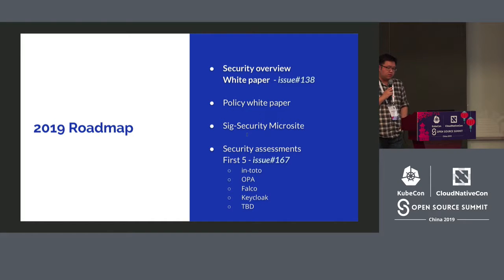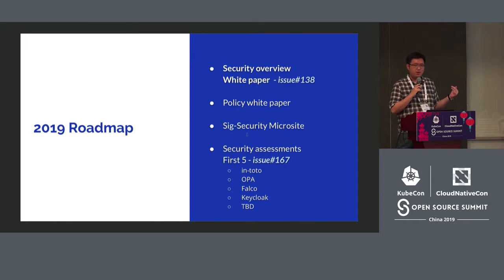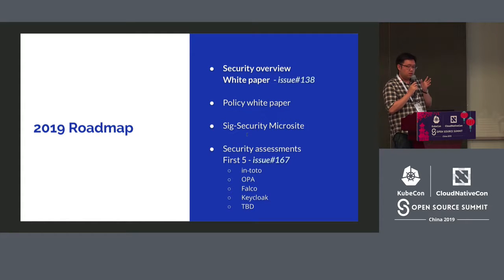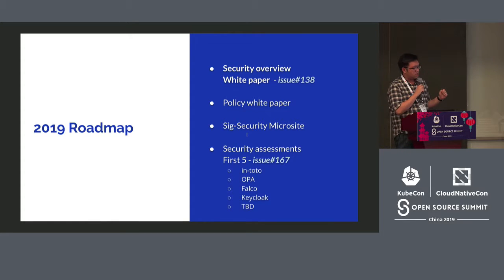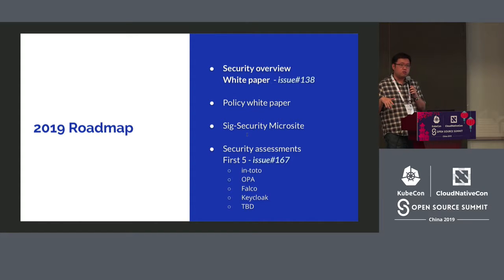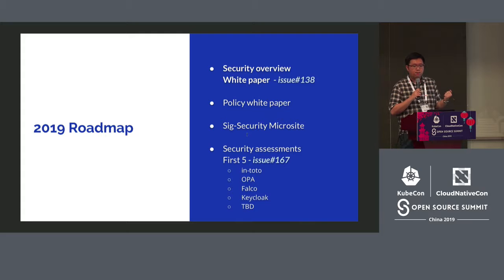A few things coming out: on top of the policy paper, we are also writing a more generic security white paper. What this white paper is going to talk about is how you do security in cloud native. It's not going to be specific to Kubernetes or certain runtimes or certain products. From an auditor or security perspective, what are the base things that you have to secure? Things like needing some kind of DevOps pipeline, verification, and runtime verification. The policy white paper is also ongoing.